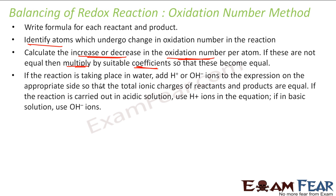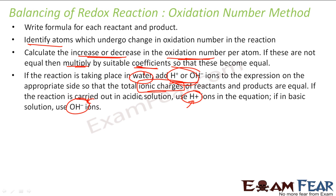And if it is taking place in water, we have to add H⁺ ions or OH⁻ ions. If it is taking place in acid, we add H⁺ ions. If it is taking place in basic medium, we add OH⁻ ions. So if it is neutral, we can add water. If it is acidic, we add H⁺. If it is basic, we add OH⁻. We'll take some examples on this. This step is to balance ionic charge.